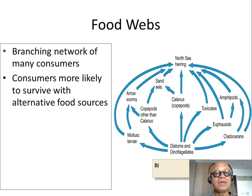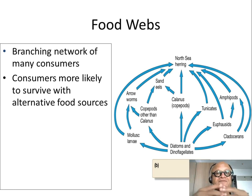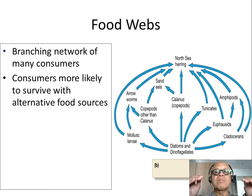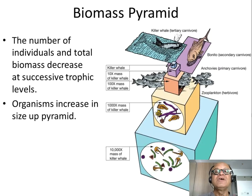Mathematical modeling shows that complex networks of dependence tend to be stable. For example, a tree relying on many pollinators is more resilient than one relying on a single bird — if that one bird dies, it's an issue. A more complex network is more resilient to perturbations: even if you knock off one member of the web, others can take over and maintain the food supply. Consumers with alternative food sources are more likely to survive.